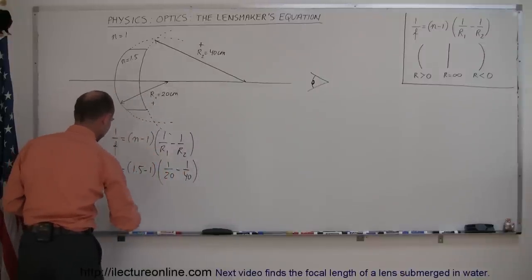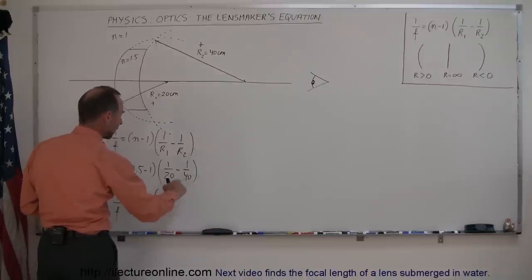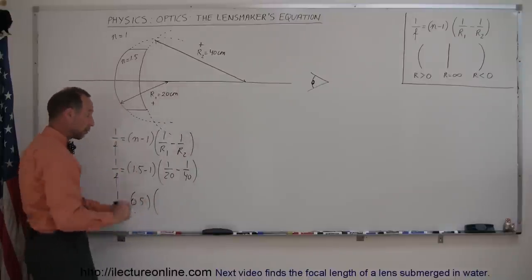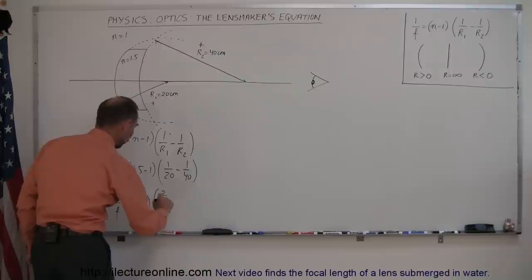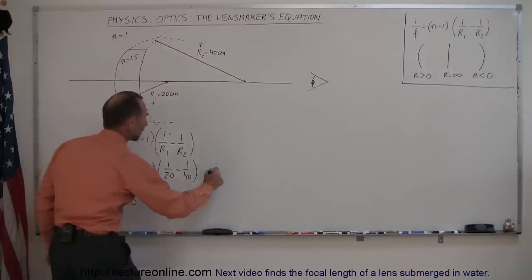So simplifying this, we have 1 over f is equal to 0.5 times, now we need a common denominator here, so I'm going to make that 40, so we have 2 over 40 minus 1 over 40, and then continuing on over here,